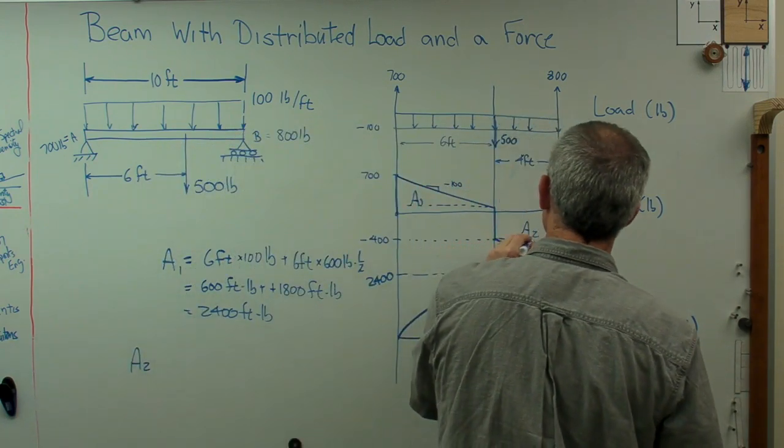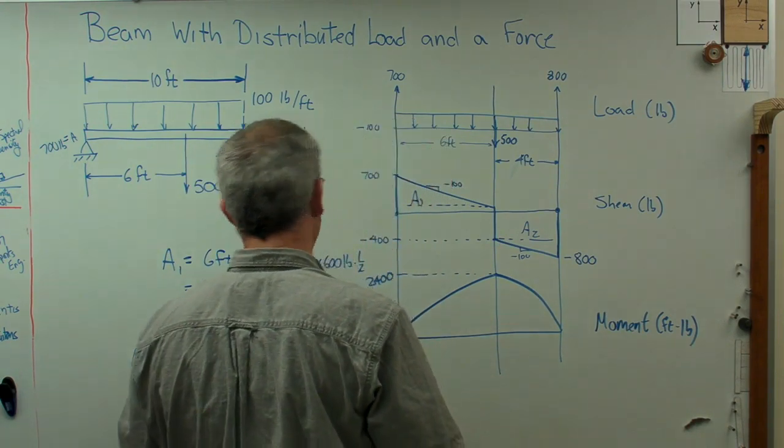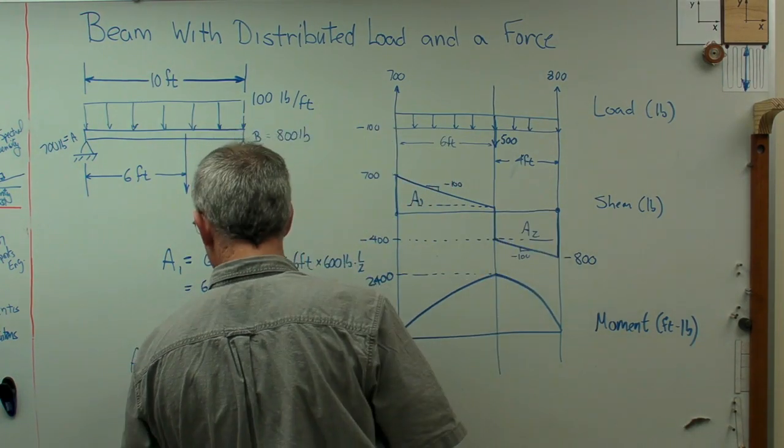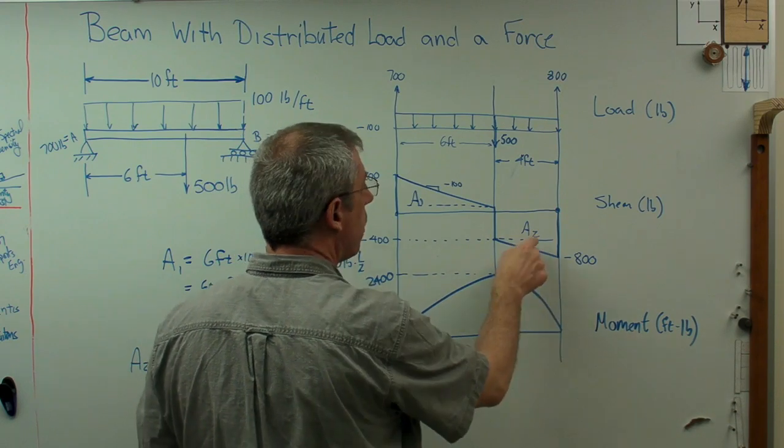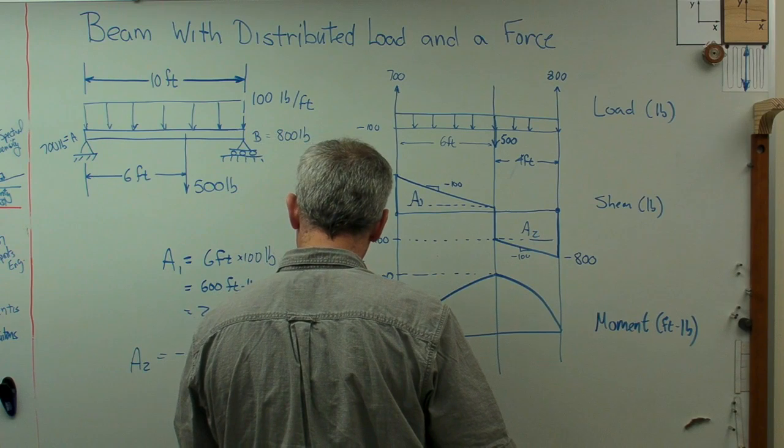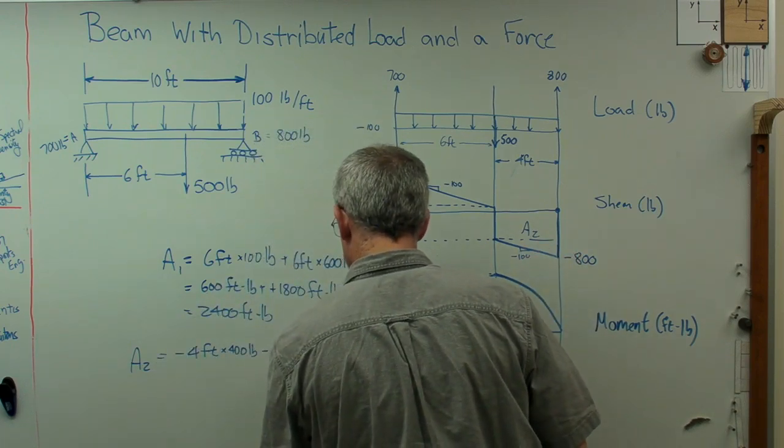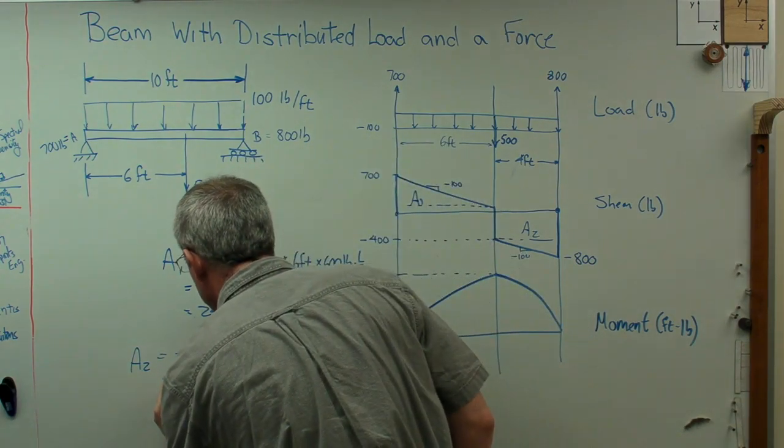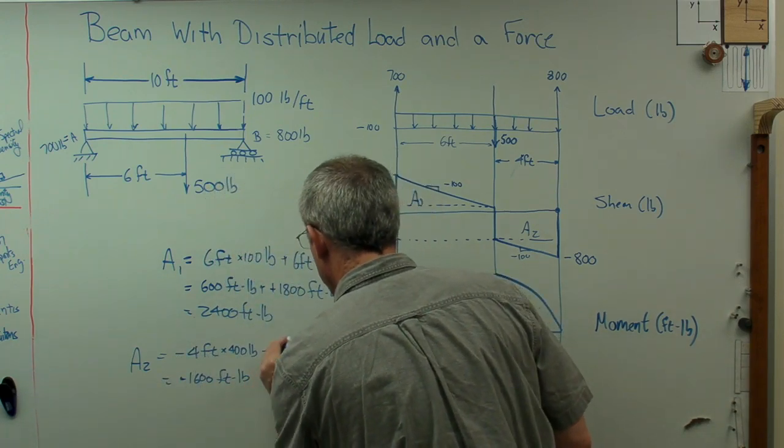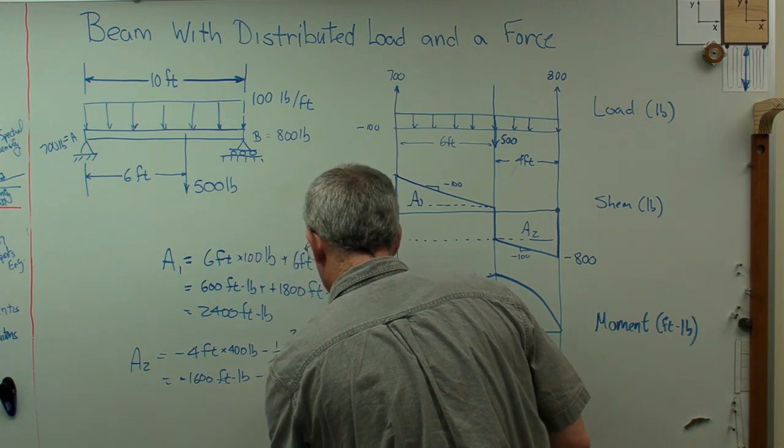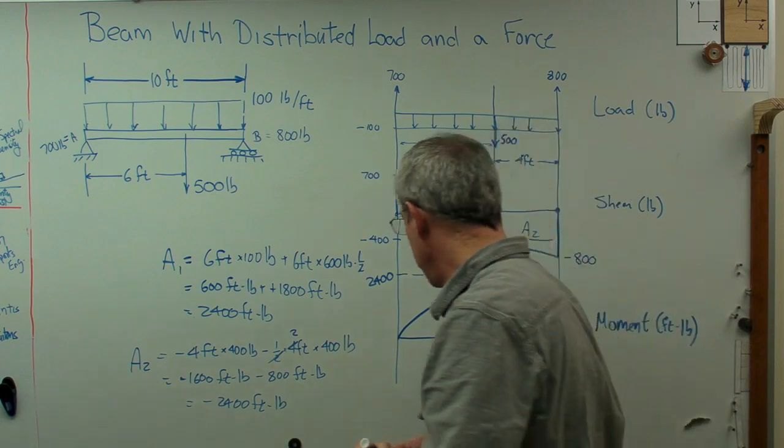a2, now I'm going to get a slightly different geometry here, I've got a rectangle there and a triangle there, these are both going to be negative areas. So the width is 4 and the height is 400, so minus 4 feet times 400 pounds, minus 1 half bh again, minus 1 half 400 times 4 feet times height, which is also 400 pounds. So I do that, I'm going to get minus 1,600 foot pounds, and that's going to be minus 800 foot pounds, and that's going to be minus 2,400 foot pounds, so I got the same answer both ways. This is really good.